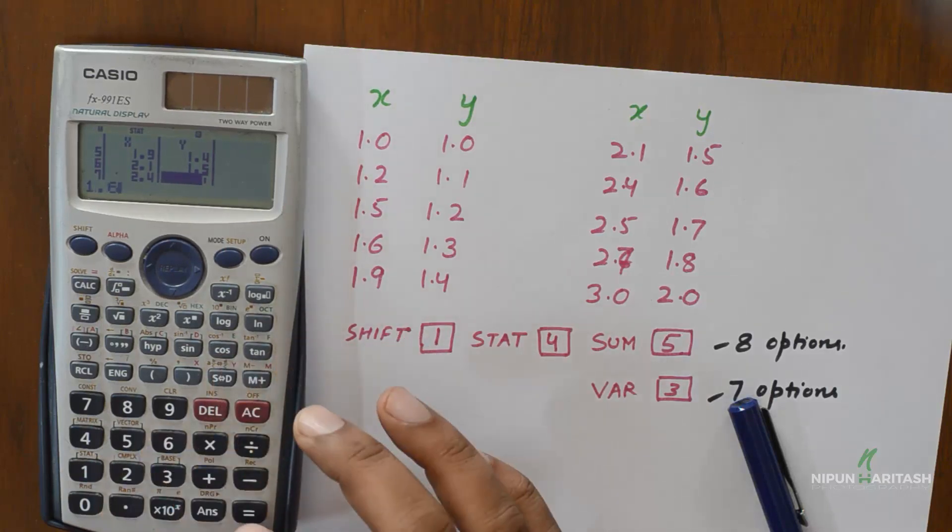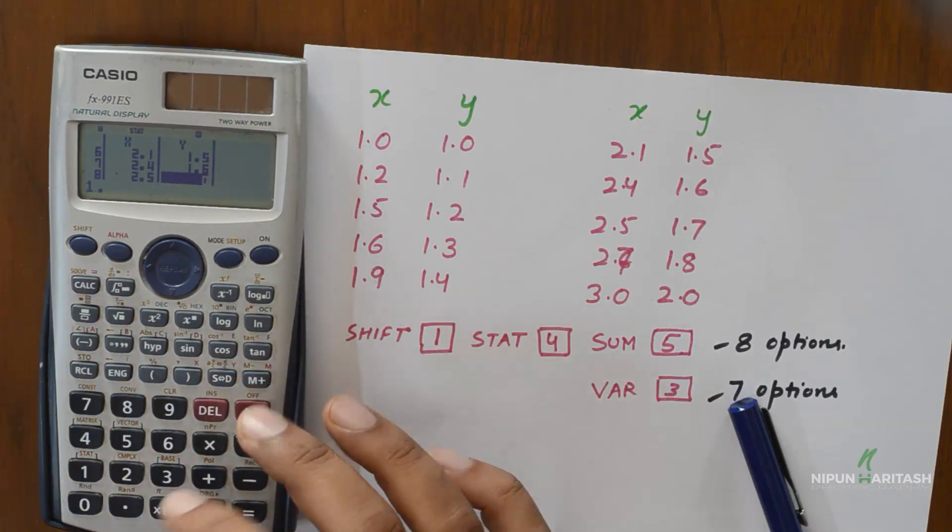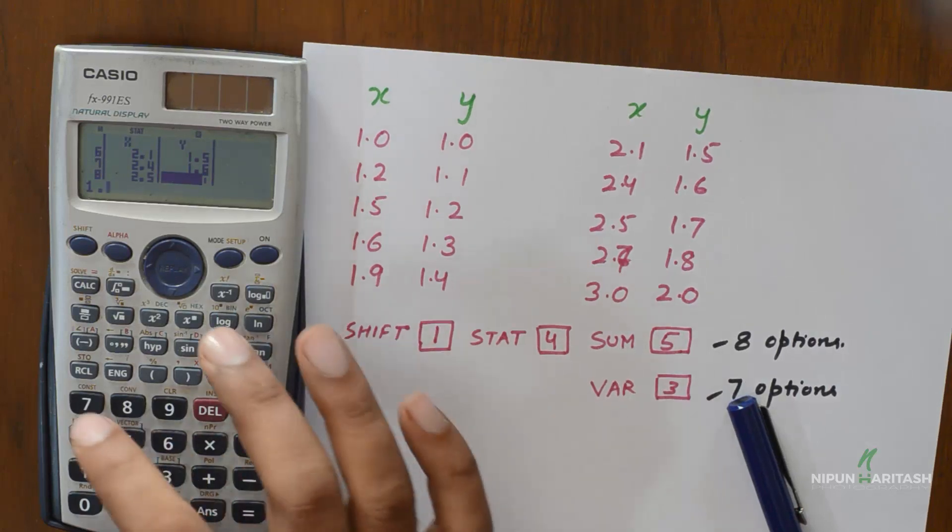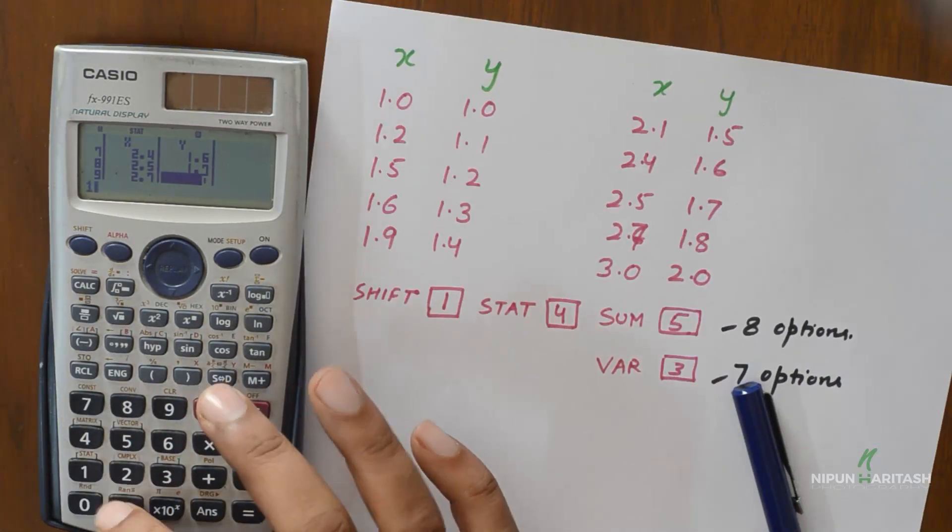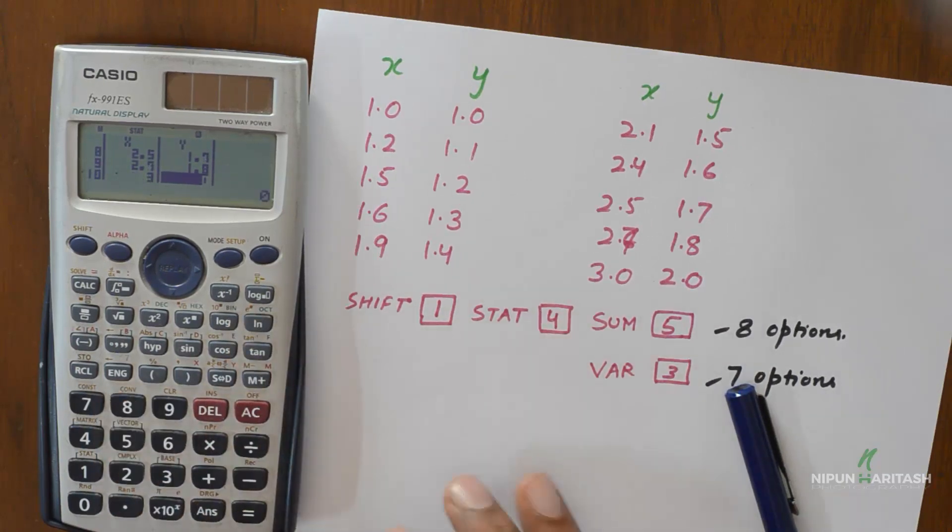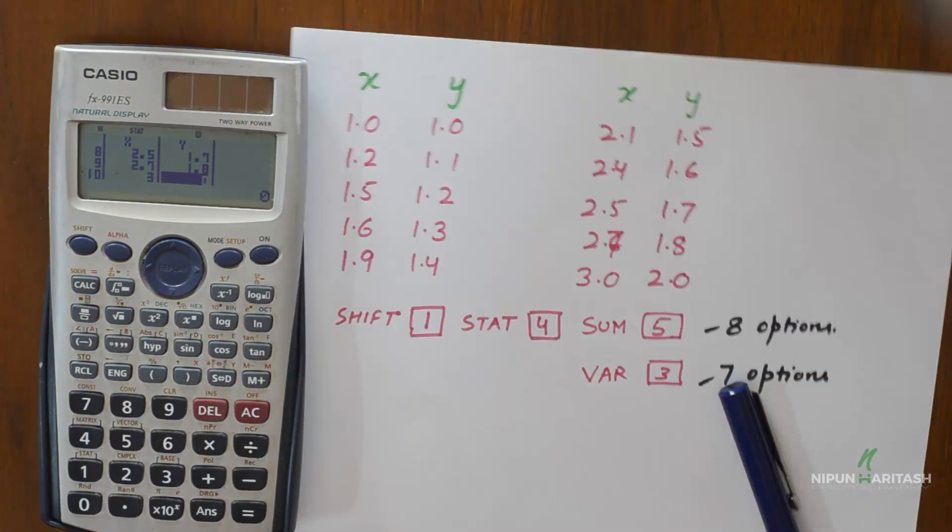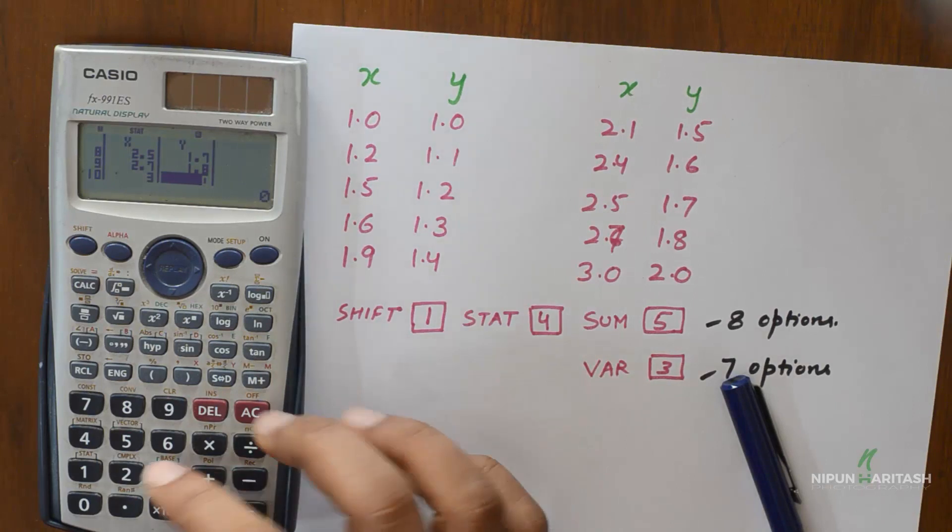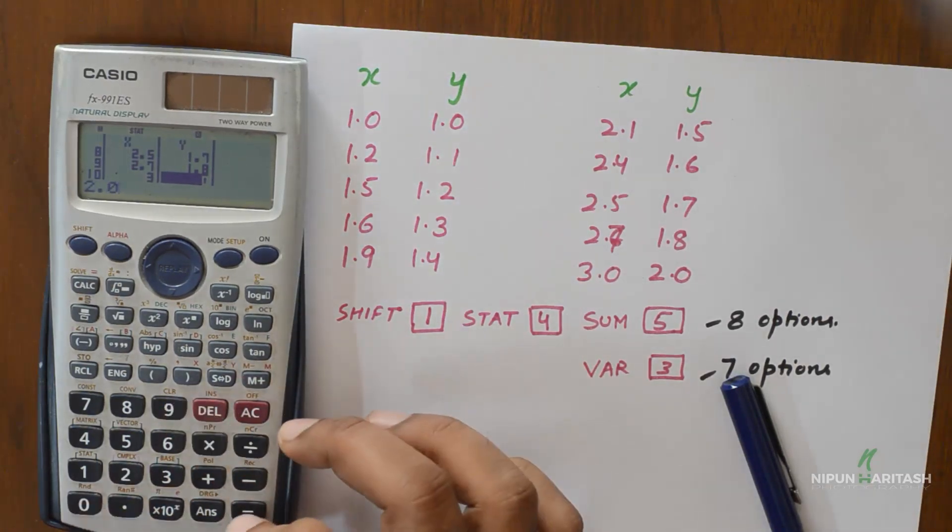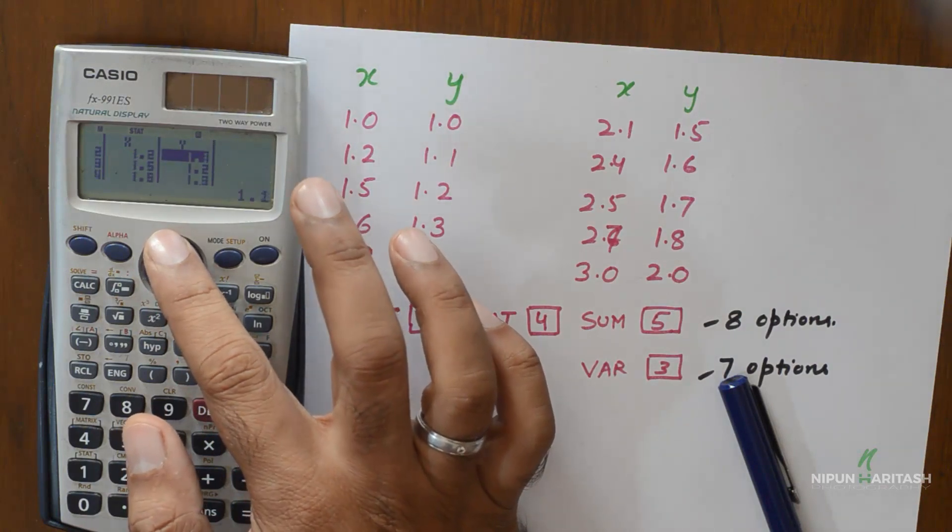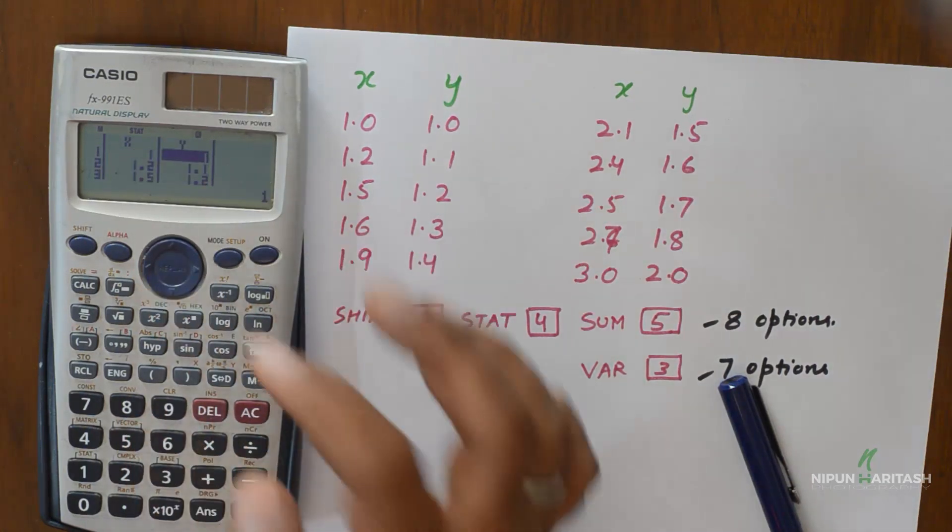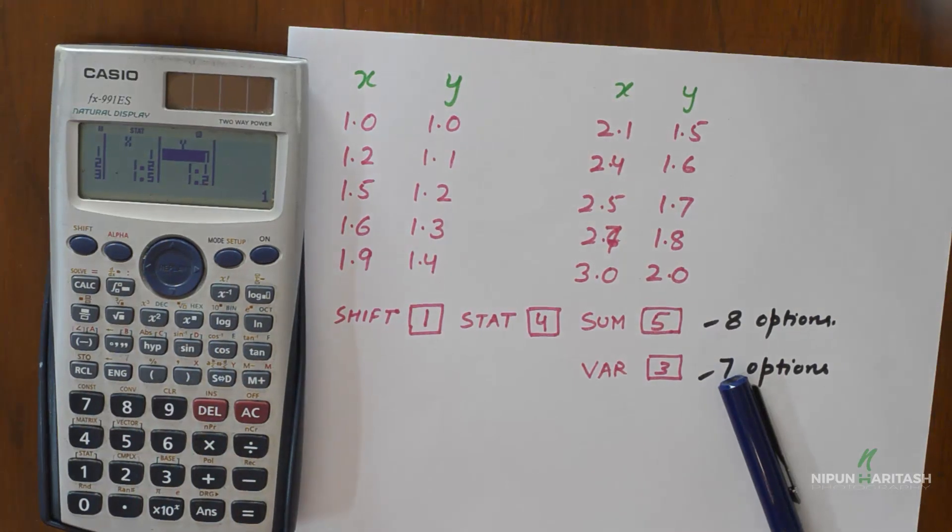Now this is a one time process. Once you enter the values it stays stored in the calculator even if you turn the calculator off. So if you press the type option again it will ask you whether you want to erase the previous data or go ahead with the previous entered data. So now I have entered the values for x and y.